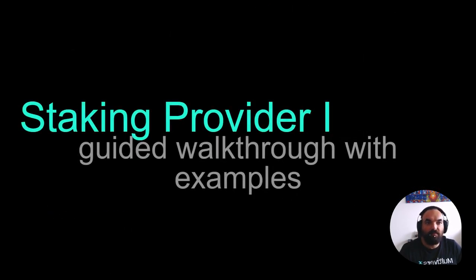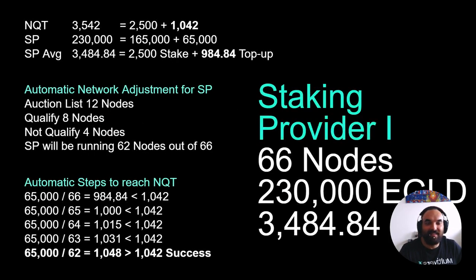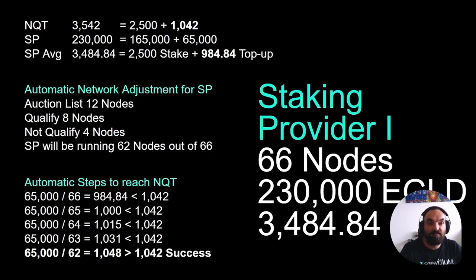Next, we will explore a few examples of staking providers, NQT, and possible scenarios to expect. We will call this staking provider 1. This staking provider has 66 nodes with 230,000 EGLD staked. We can easily calculate their staking provider NQT by dividing the total EGLD staked by the number of nodes, which gives us 3,484.84 EGLD — meaning 984.84 EGLD top-up per node.